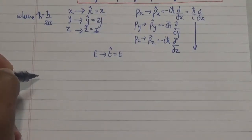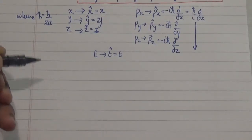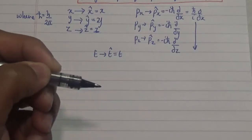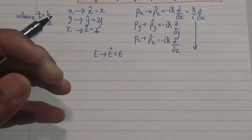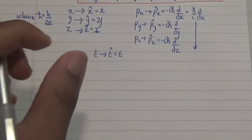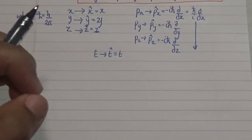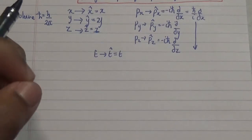In our previous video we looked at how operators pull out observables from a wave function. Now since all these informations are contained in a wave function, let's look at how we'll be able to understand what is the kinetic energy operator in one dimension.